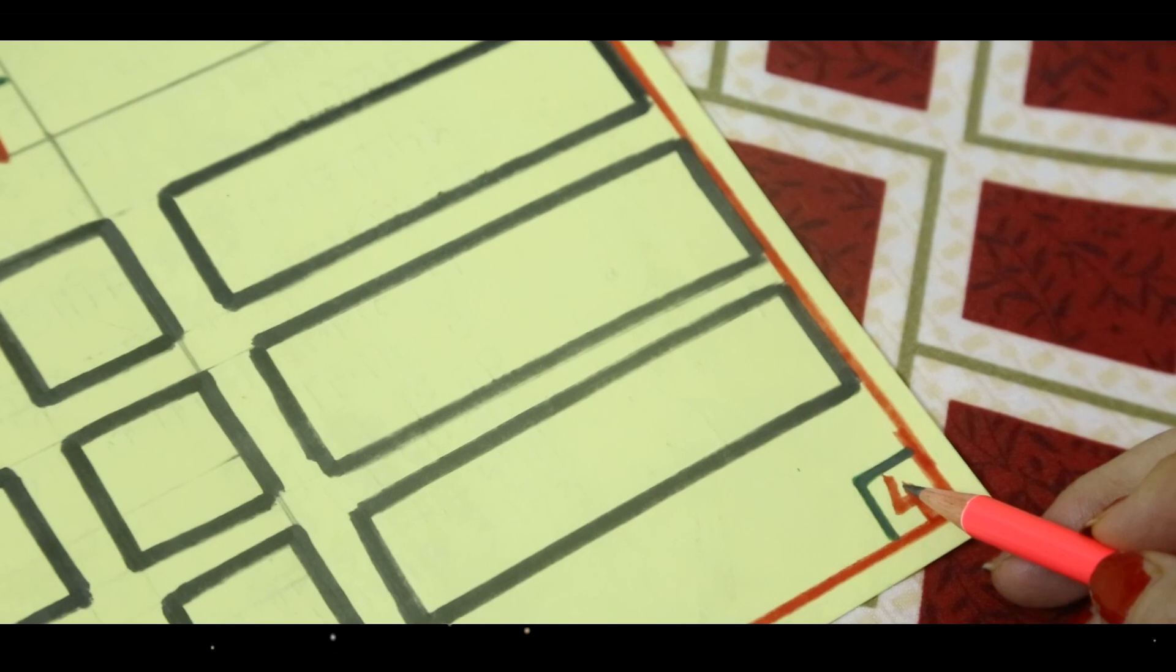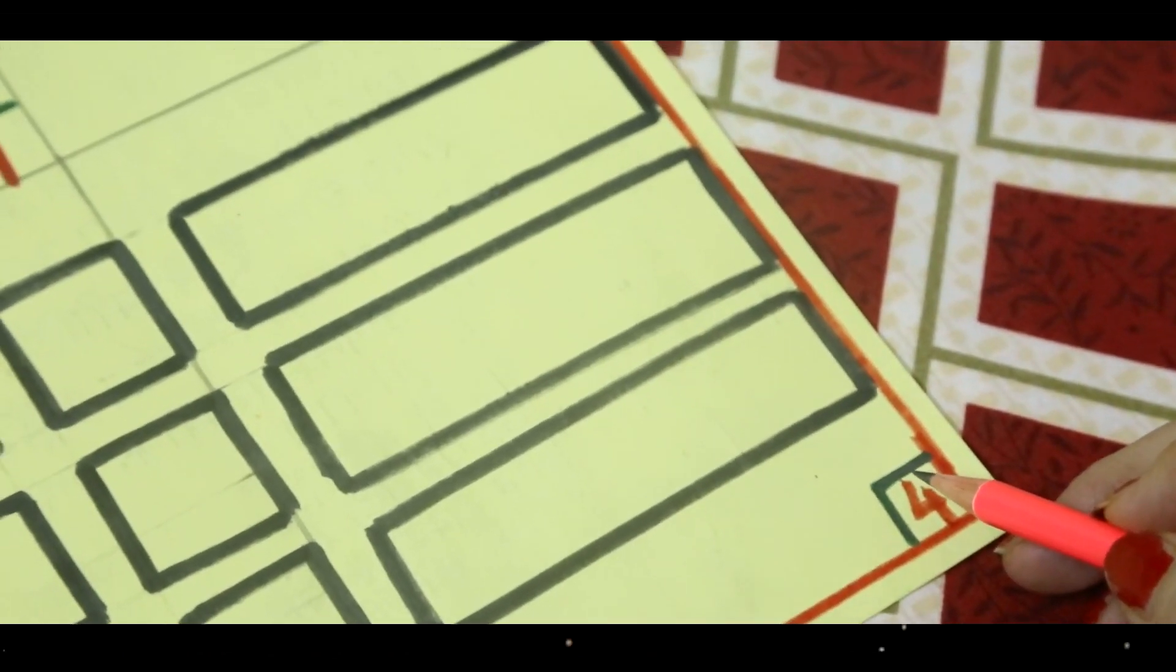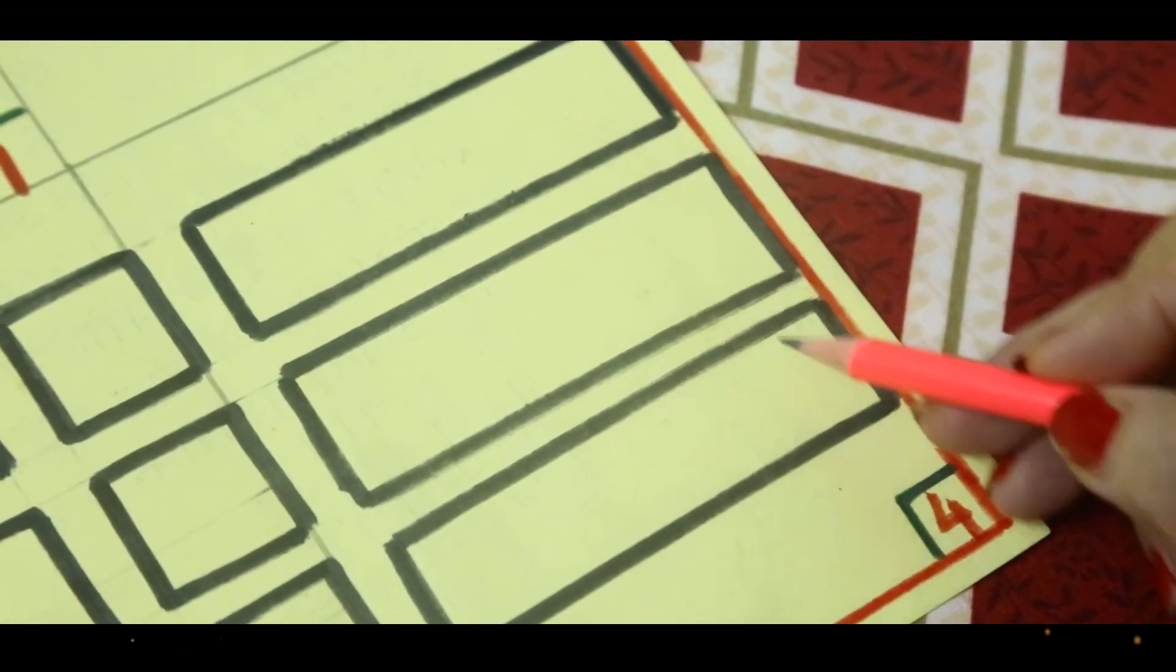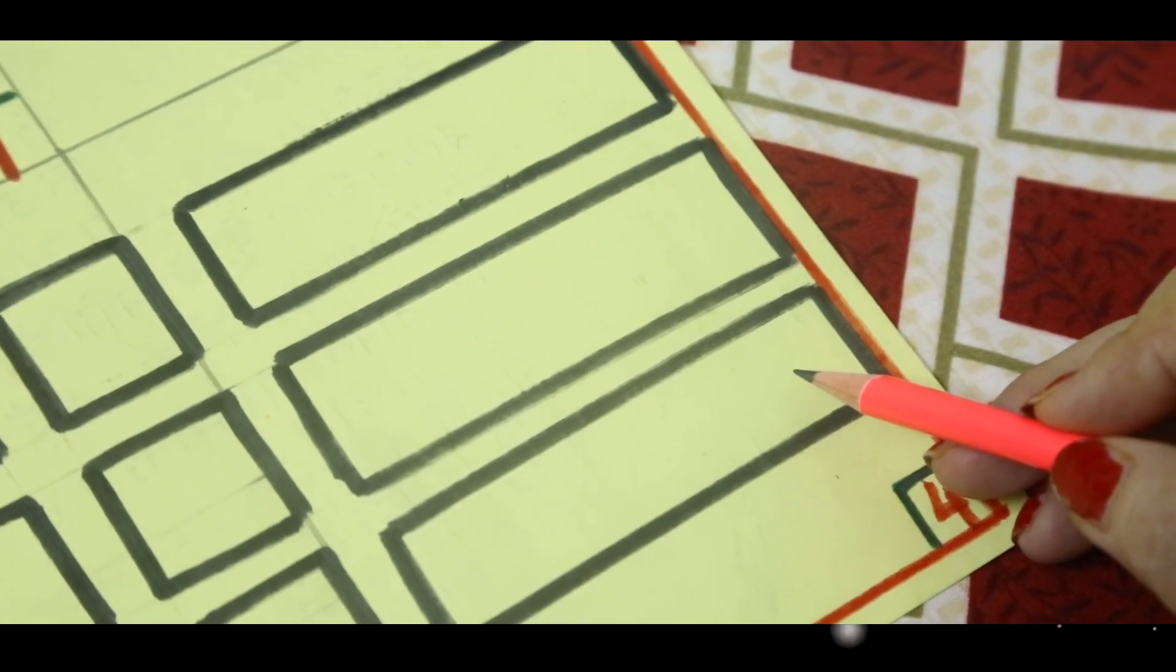In group four, we have rectangles. Let's count with me. One, two, three. There are three rectangles.